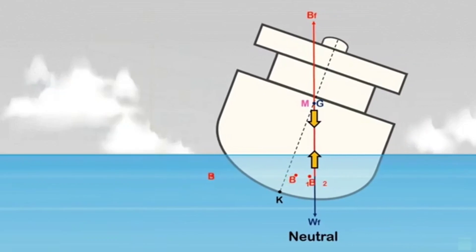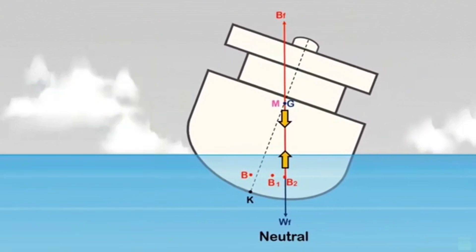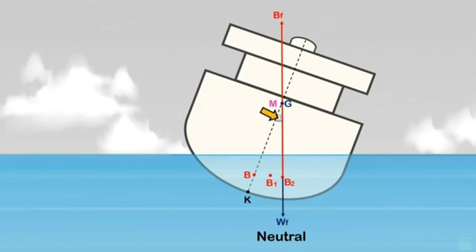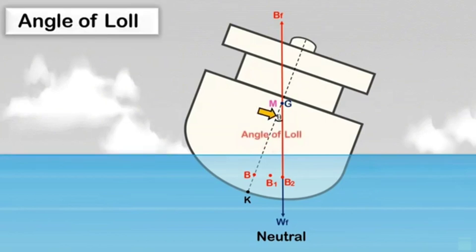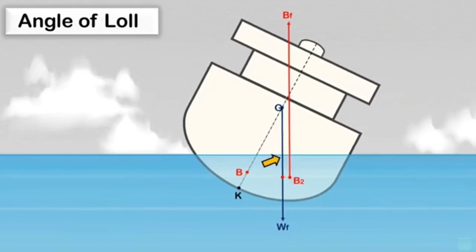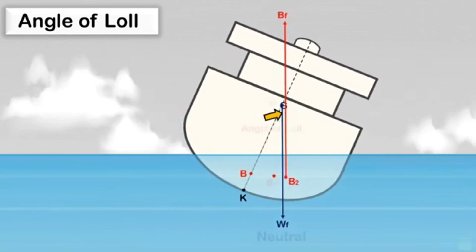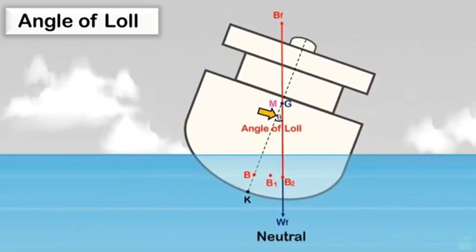In this state, the ship is now in neutral condition. Assuming the ship is floating in still water without any external forces, she will remain in this position since no righting lever or capsizing lever exists. The angle formed between the vertical line of force and the ship's centerline is called the angle of loll. If the ship is heeled further beyond the angle of loll by external forces, the center of buoyancy moves further to the low side, creating a righting lever and righting moment that brings the ship back to the angle of loll.